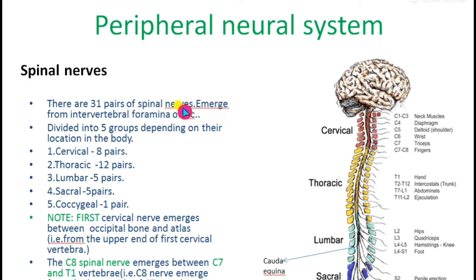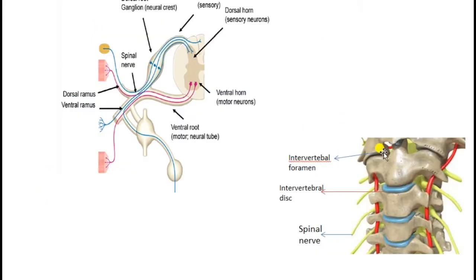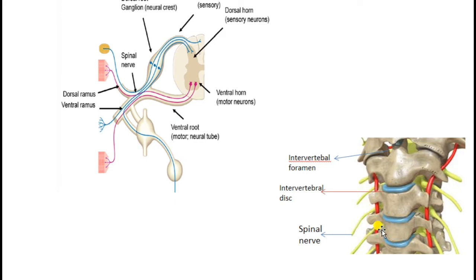There are thirty-one pairs of spinal nerves present, which emerge from the intervertebral foramina. The disc present between successive vertebrae is known as the intervertebral disc. A pore or opening is present there, known as the intervertebral foramen, and from this foramen the spinal nerve emerges out.